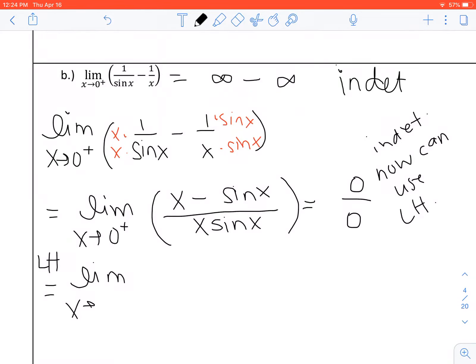So put an LH. The limit stays the same. And taking the derivative of the numerator by itself, we have 1 minus the derivative of sine is cosine of X, all over, and then taking the derivative of the denominator. Notice that you are multiplying two things together. So we have the first one times the derivative of the second one plus the second one times the derivative of the first.